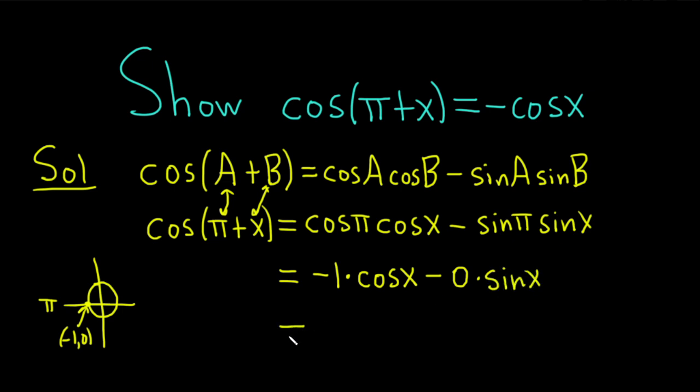Really nice. This is equal to negative 1 times cosine is negative cosine. And then 0 times sine is 0, so I just won't write it. So that's it. That completes it.